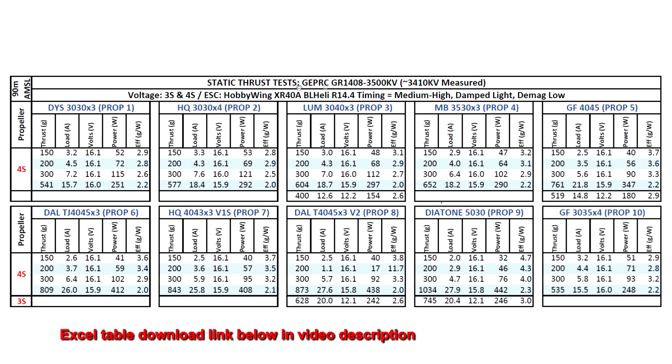All right, so here are the thrust test results for the GEPRC GR 1408 3500kV. The motor measured at 3410kV, it's slightly lower than the spec 3500kV. On the 3 inch prop the motor is pretty much performing very similar to the other 1407s, as you can see with the Lumenier 3040x3, 600 grams pretty similar to all the other 1407s, although it seems that it is using slightly lower amps. So it's got that going for it - lower amps means it's a little bit more efficient and it's making pretty decent thrust.